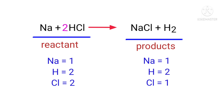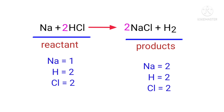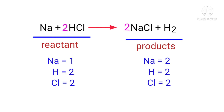The hydrogen atoms are now balanced, but the chlorine atoms are unbalanced. To balance the chlorine we put a coefficient of two in front of NaCl. The chlorine atoms are now balanced. Next we need to balance the sodium atoms, so we put a coefficient of two in front of Na.